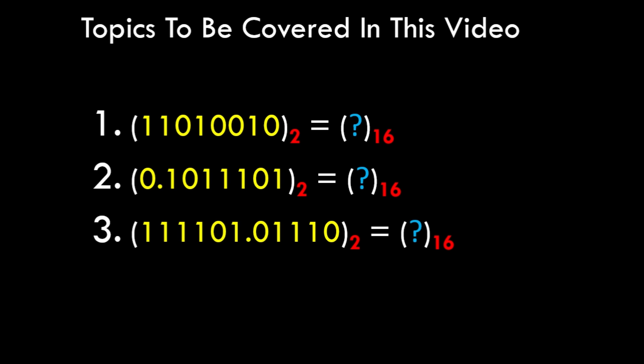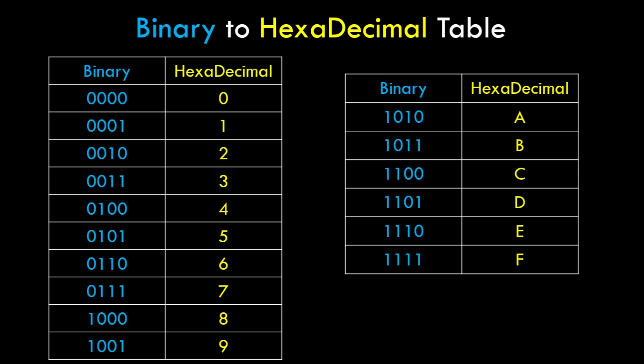As you can see on the screen we have 3 different types of binary numbers: the first is a plain integer binary number, the second is a fractional binary number, and the third is a combination of both. Before we start the conversion process, let's see the conversion table between binary and hexadecimal numbers. The base and radix value of the hexadecimal number system is 16, so we have 16 different symbols. The first 10 values are plain numbers 0 through 9, and the remaining 6 values are alphabets with their corresponding binary equivalents. Keep this table in mind as we will need these values during conversion.